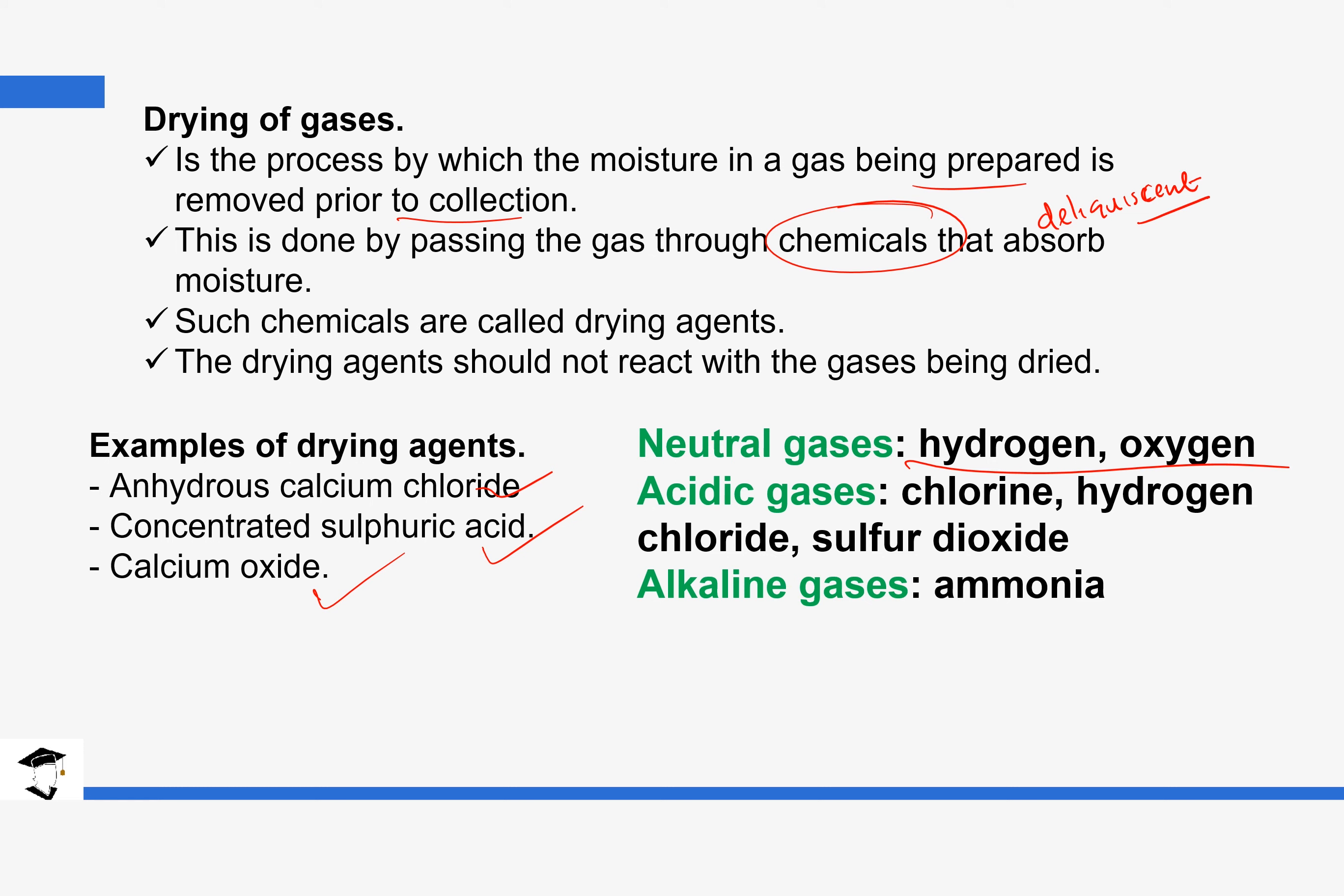However, for the acidic gases, which is chlorine, hydrogen chloride, and sulfur dioxide, we cannot use the calcium oxide to dry it. This is because it's going to react with the calcium oxide to form a salt. Later on, we are going to discuss this in detail when we get to Form 3.